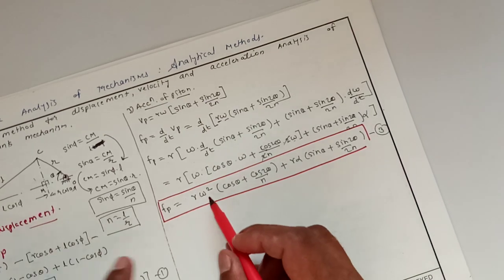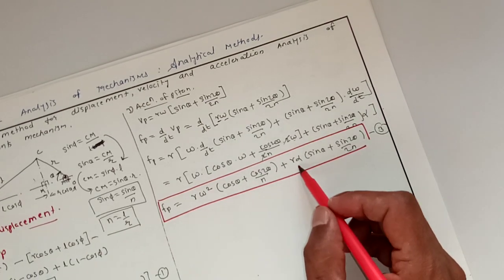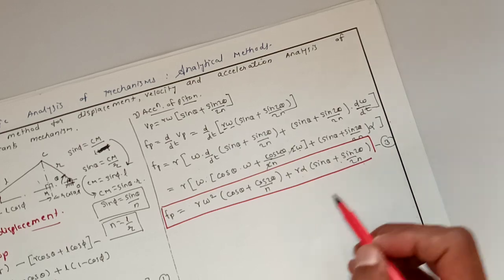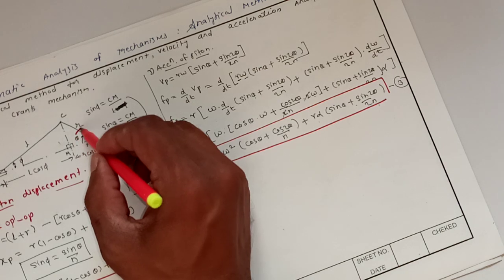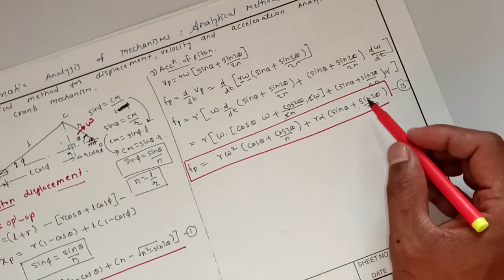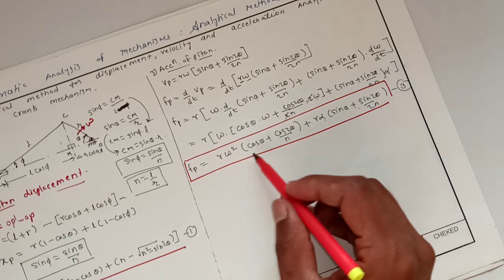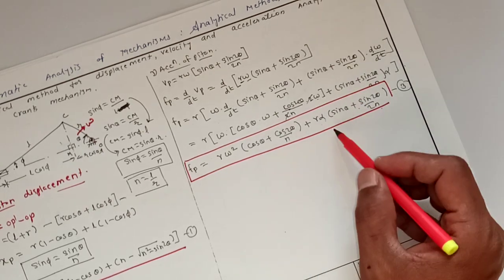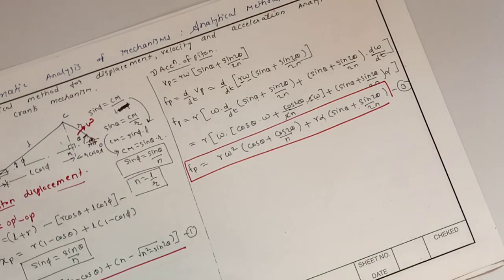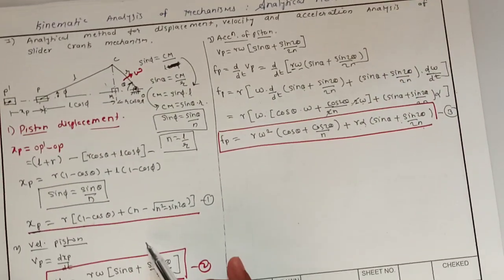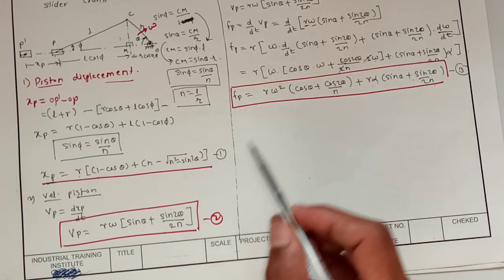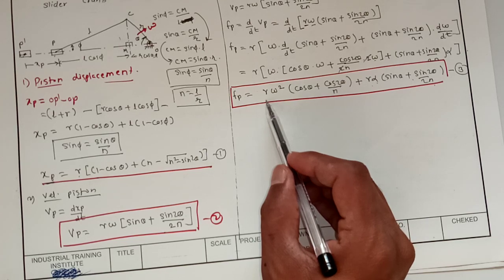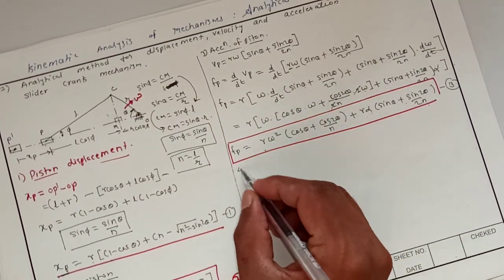So the acceleration of the piston is FP = Rω²[cos θ + cos(2θ)/N] + Rα[sin θ + sin(2θ)/(2N)]. This is equation 3. When the crank speed is constant, α = 0 and the second term cancels, simplifying to FP = Rω²[cos θ + cos(2θ)/N] for uniform crank rotation.